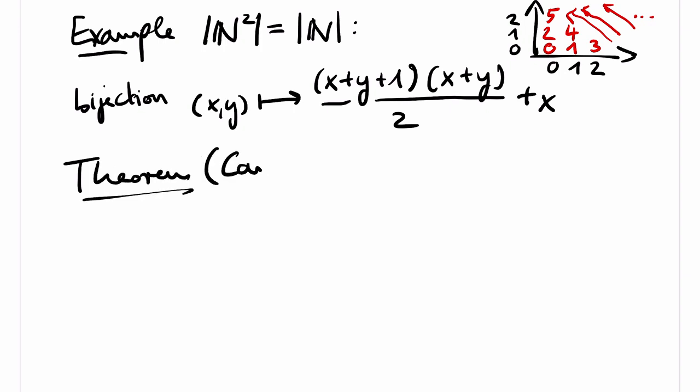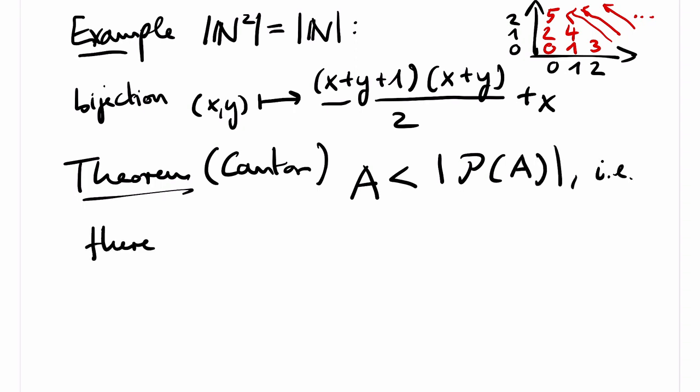And you might now wonder, aren't maybe all infinite sets in bijection to each other? Is it perhaps true that all infinite sets have the same cardinality? And the answer is no. More than 100 years ago, Cantor proved that the power set of a set A is strictly larger than A. That is, there is no surjection from A to the power set of A.